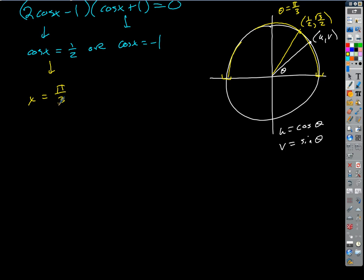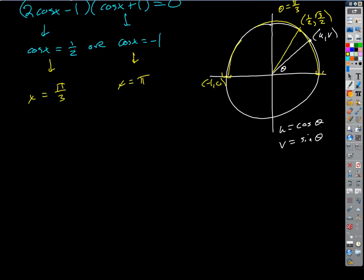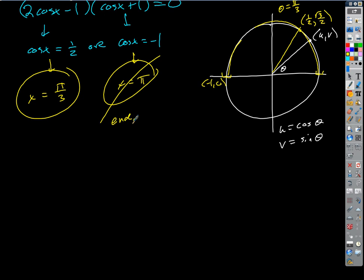What about cos(x) = −1? Where would the x-coordinate be negative one? That's at x = π. But are both of those guaranteed by the mean value theorem? The mean value theorem only guarantees values of C in the open interval between the endpoints. So x = π is an endpoint, and we can discard it. We only actually get one value of C in this case: x = π/3.